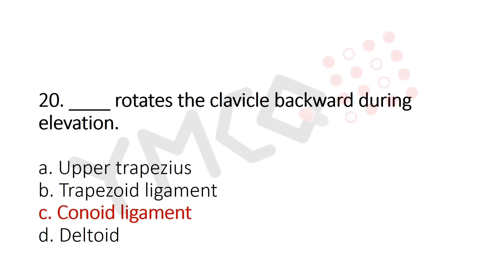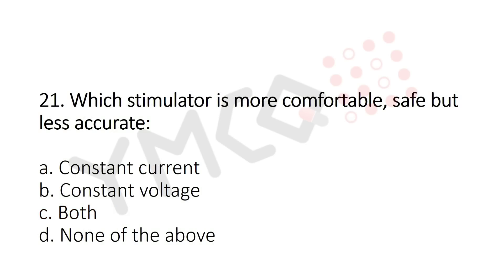Question 21: Which stimulator is more comfortable and safe but less accurate? Option A: constant current; option B: constant voltage; option C: both; option D: none of the above. The answer is option B: constant voltage.